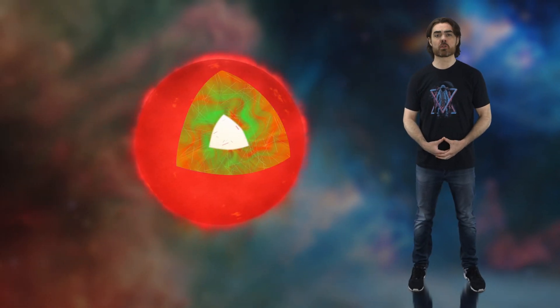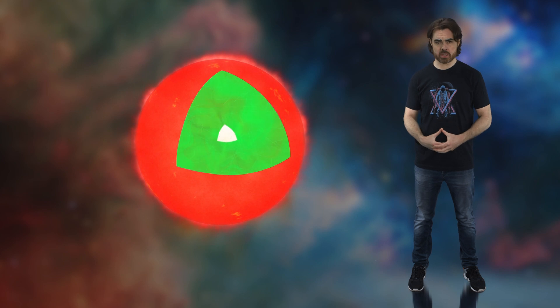That 10 trillion years assumes our red dwarf keeps burning at the same old rate. It doesn't. Just like the sun, the cores of red dwarf stars shrink and heat up over time. The heating core causes red dwarf fusion rates to increase by a factor of 10 or more, particularly towards the ends of their lives. That shortens their lifespans. But we're still talking trillions of years.